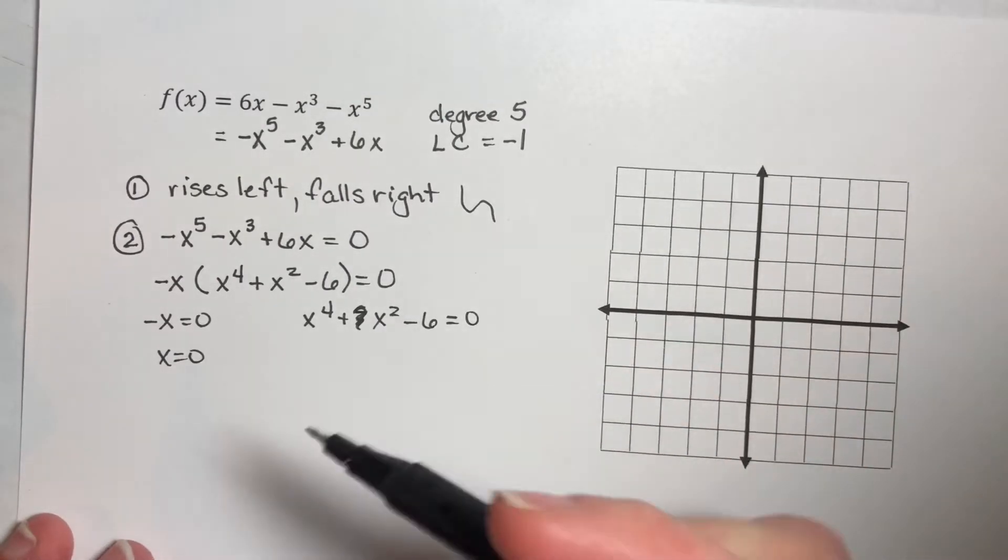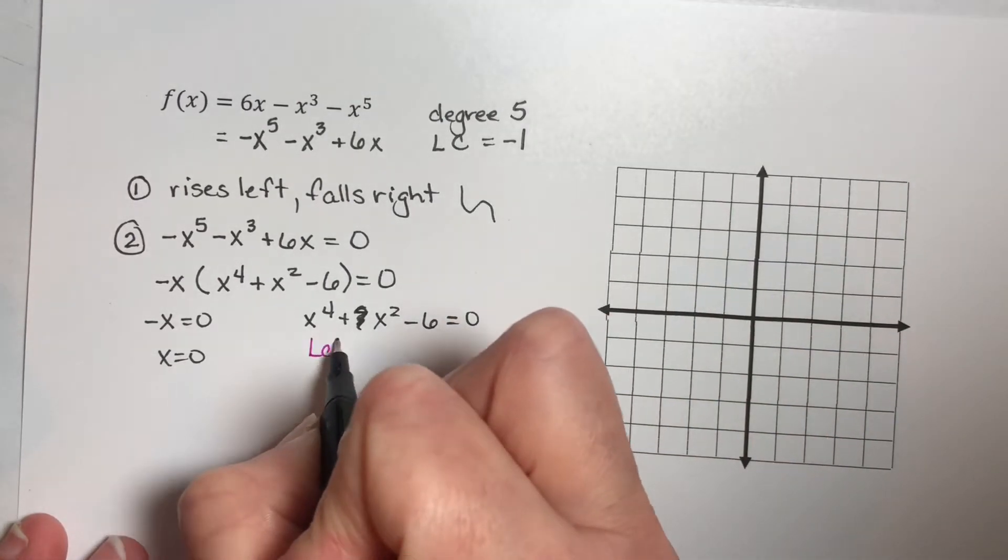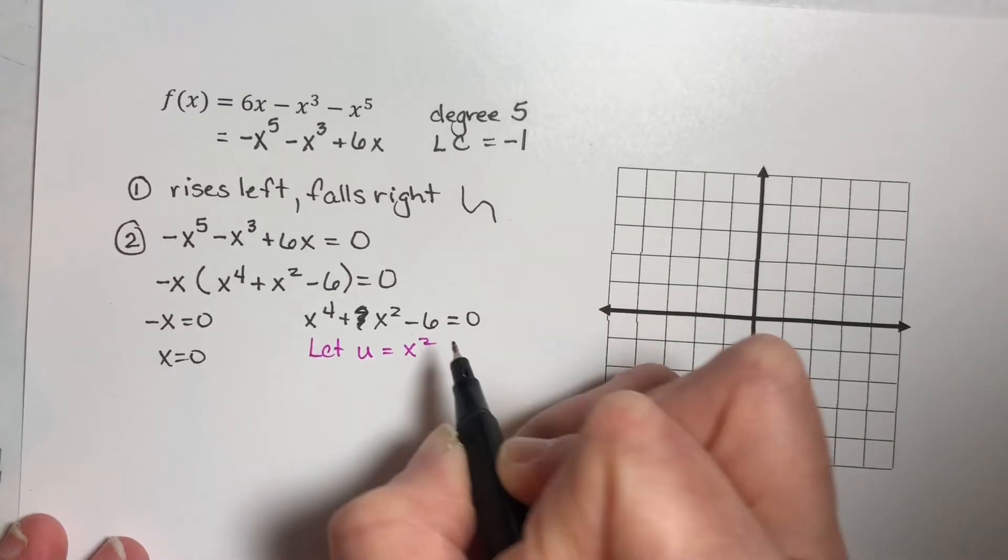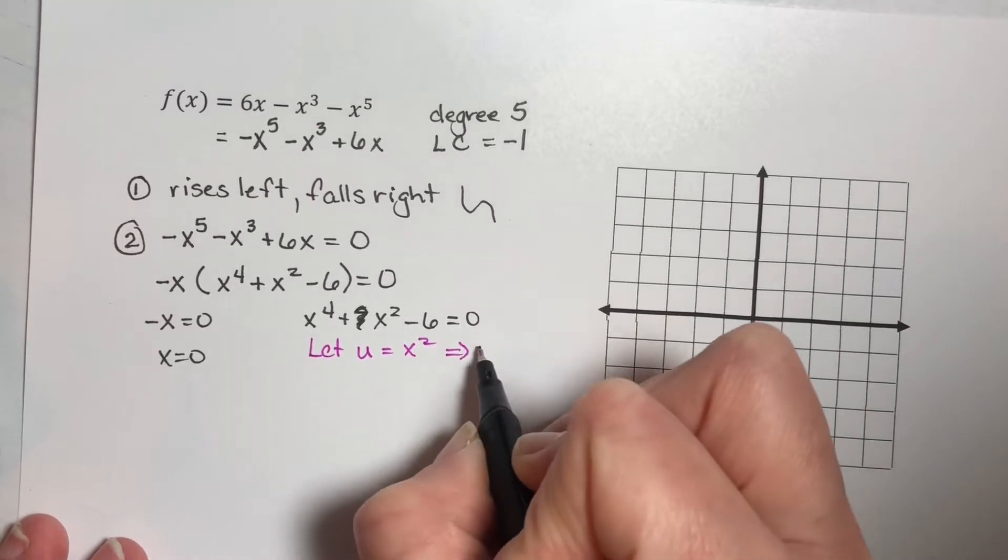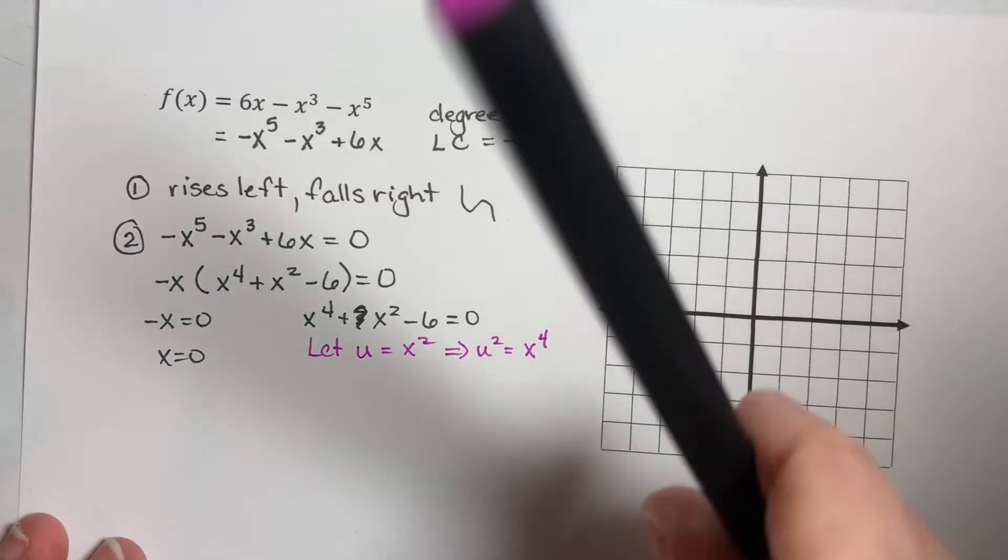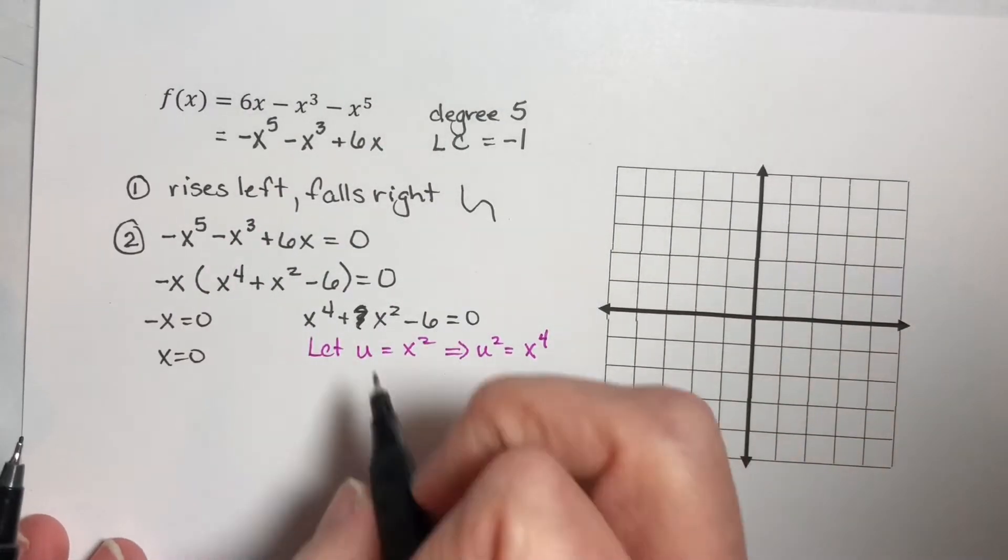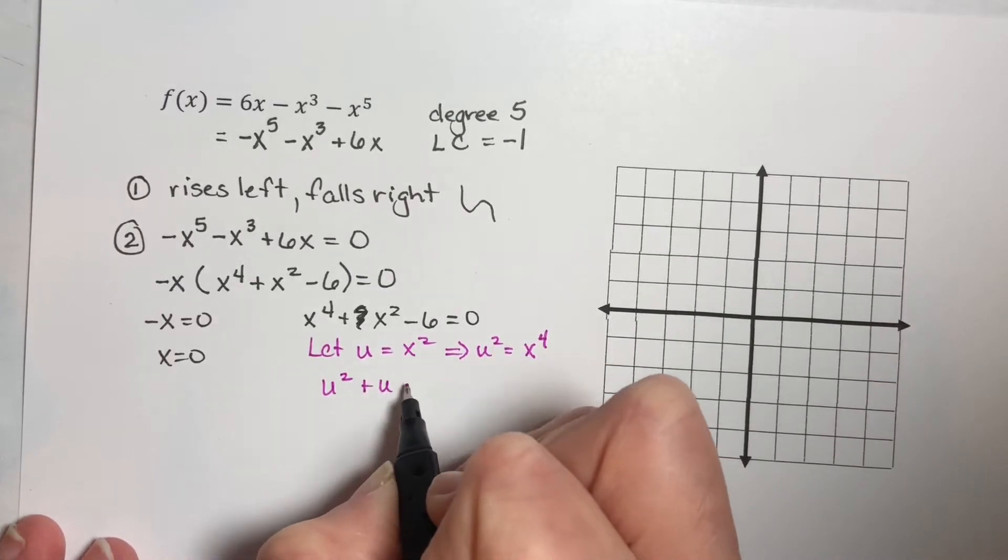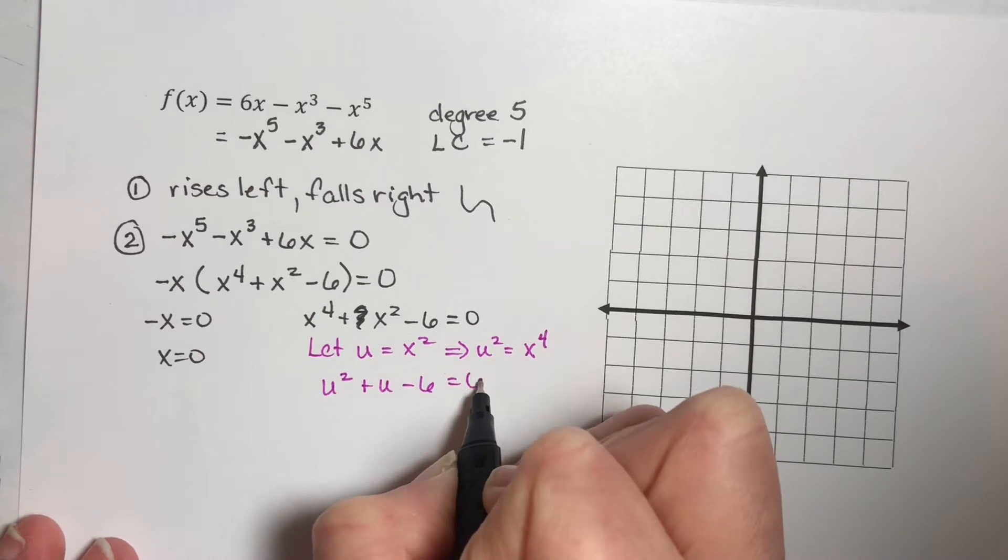So what we want to do is we want to make a substitution. Let u stand for x squared. And what that means is that u squared is the same thing as x to the fourth. So we can rewrite this as u squared plus u minus 6 is equal to zero.